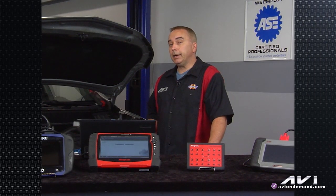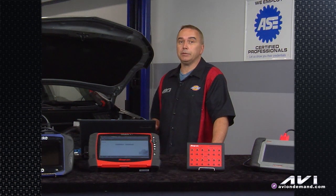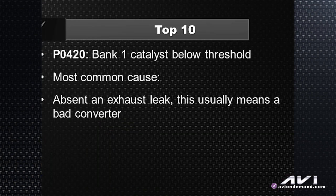Out of the top ten trouble codes as rated by the state of Wisconsin for the federal EPA, one of the most common ones that gives mechanics a hard time diagnosing is a P0420 code. P0420 means bank one catalyst below threshold. The most common cause is probably going to be a bad catalytic converter, but it could also be an exhaust leak somewhere in the system or a bad cat sensor on the vehicle.